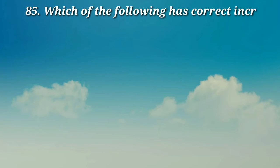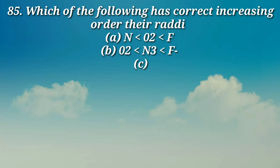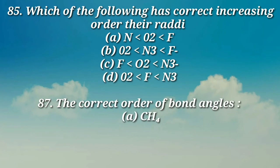Question number 85: Which of the following has correct increasing order of their radii? (a) N < O2- < F, (b) O2- < N3- < F, (c) F < O2- < N3-, (d) O2- < F < N3-.